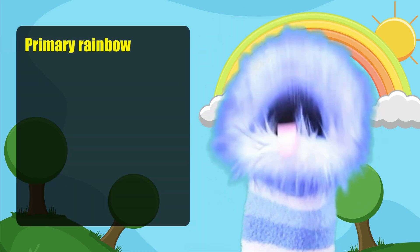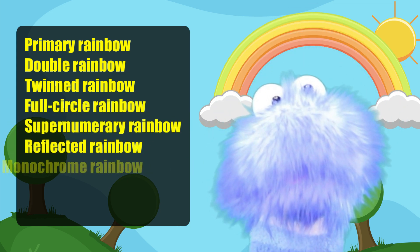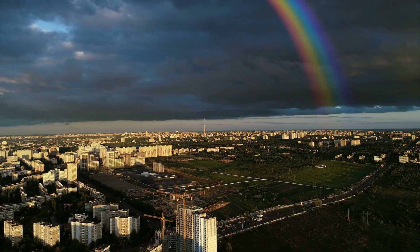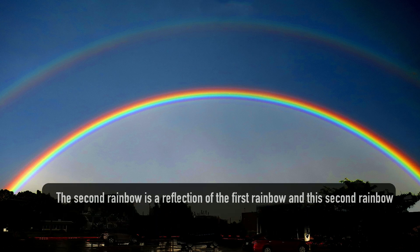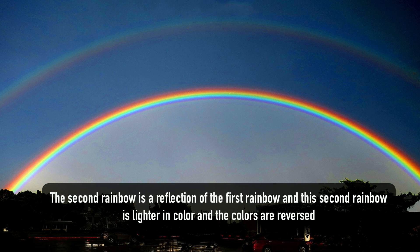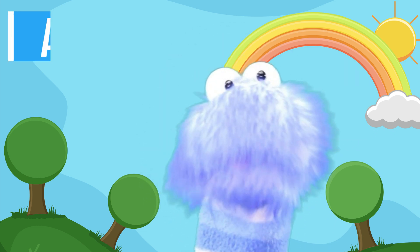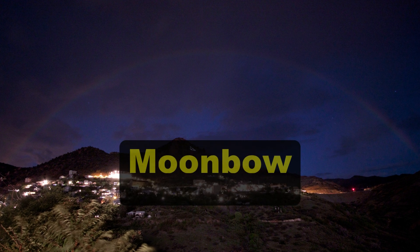Did you know there are actually nine different types of rainbows? The nine common types are: primary rainbow, double rainbow, twinned rainbow, full circle rainbow, supernumerary rainbow, reflected rainbow, monochrome rainbow, higher order rainbow, and fog bow. A primary rainbow is the most common type. A double rainbow happens when light refracts and reflects off water drops two times, making the second rainbow a reflection of the first — lighter in color with reversed colors. You'll also see a dark band between the two rainbows called Alexander's Band.